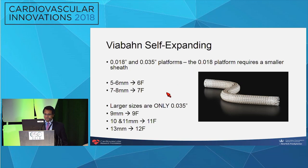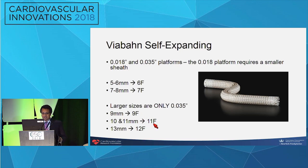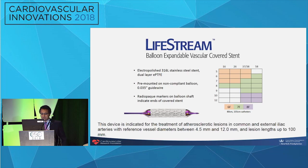You have to recognize that if you call for a Viabahn, they come in two flavors. One is an 018 platform and the other is the 035 platform. The 018 platform uses smaller sheath compatibility — you can go as small as 6 French for a 5 to 6 millimeter Viabahn, and 7 to 8 millimeters requires 7 French. The 035 platform is at least one French size bigger. For larger sizes: a 9 goes through a 9, a 10 and 11 go through an 11, and a 13 goes through a 12 — basically one-to-one based on vessel diameter. This is critically important when calling in a panic for a covered stent. We've already heard about the Lifestream; the lengths go up to 58, and 8 French compatible can get you up to 12 millimeters.